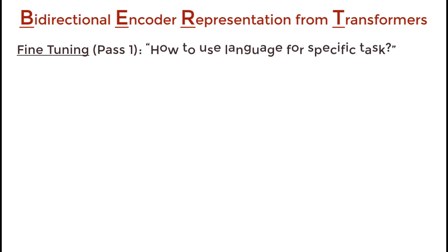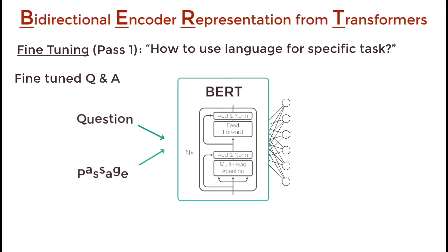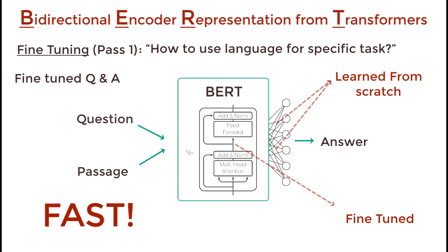We can now further train BERT on very specific NLP tasks. For example, let's take question answering. All we need to do is replace the fully connected output layers of the network with a fresh set of output layers that can output the answer to the question we want. Then we perform supervised training using a question answering dataset. It won't take long since it's only the output parameters that are learned from scratch — the rest of the model parameters are just slightly fine-tuned. As a result, training time is fast, and we can do this for any NLP problem.